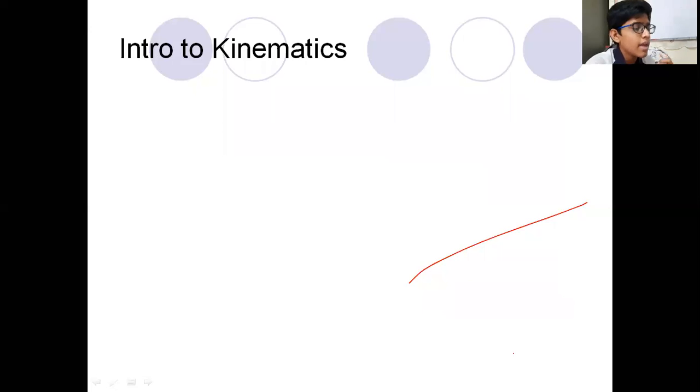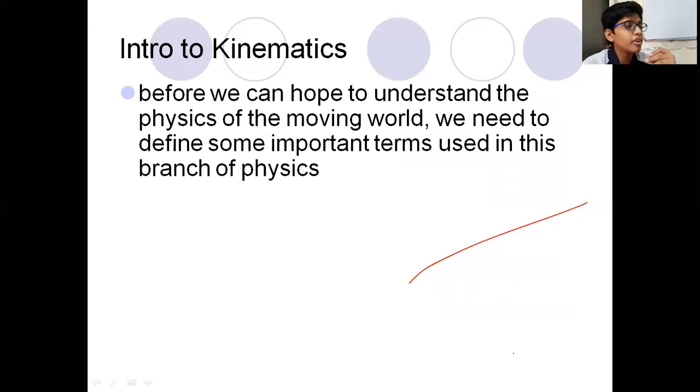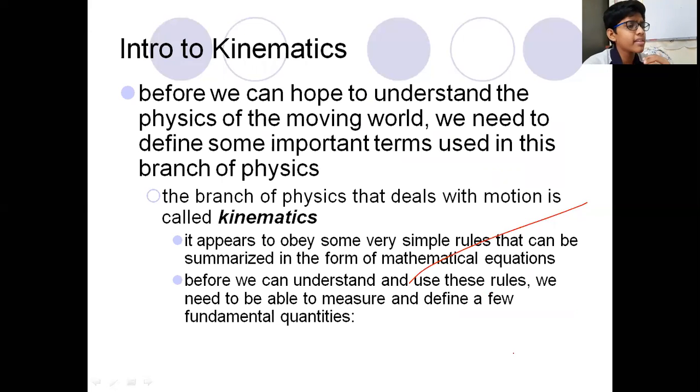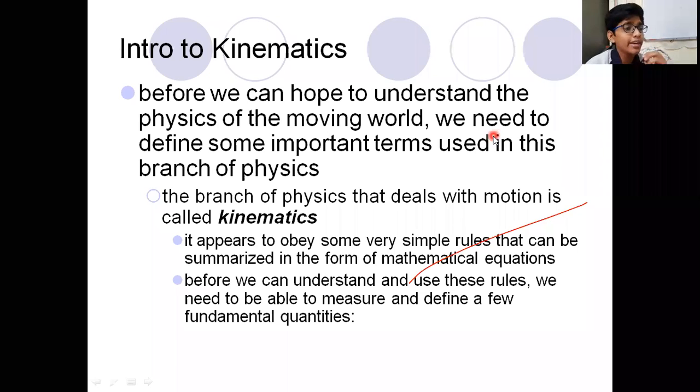Introduction to kinematics. Before we can hope to understand the physics of the moving world, we need to define some important terms used in this branch of physics. The branch of physics that deals with motion is called kinematics. It appears to obey some very simple rules that can be summarized in the form of mathematical equations. Before we can understand and use these rules, we need to be able to measure and define a few fundamental quantities.